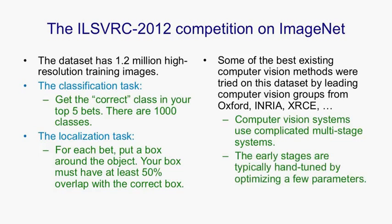The early stages of these systems are typically hand-tuned by optimising a few parameters using some of the data, and the top stage is always a learning algorithm. But they don't learn all the way through in the way that a deep neural net does when trained with backpropagation — they don't have end-to-end learning, where the parameters used in the early feature detectors are influenced by how useful they are for making the final decision about classes.